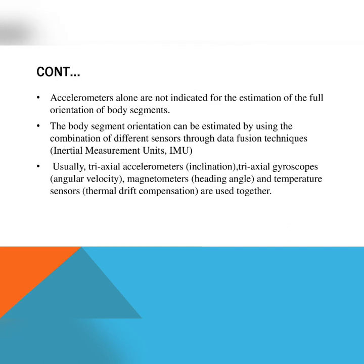Accelerometers alone are not indicated for the estimation of the full orientation of a body segment. The body segment orientation can be classified by using the combination of different sensors through data fusion techniques. IMU — Inertial Measurement Units — usually combine a tri-axial accelerometer, tri-axial gyroscope, magnetometer (for inclination), angular velocity, heading angle, and temperature sensors used together.